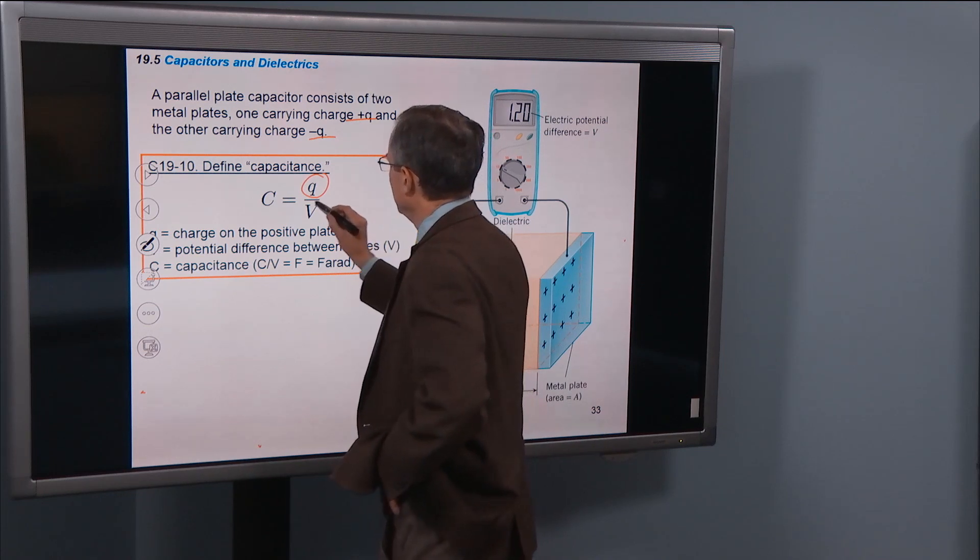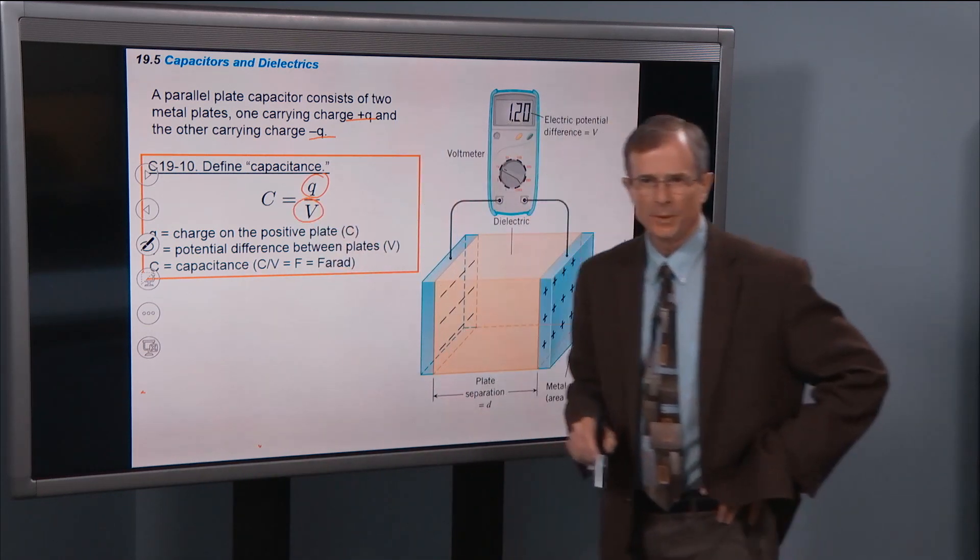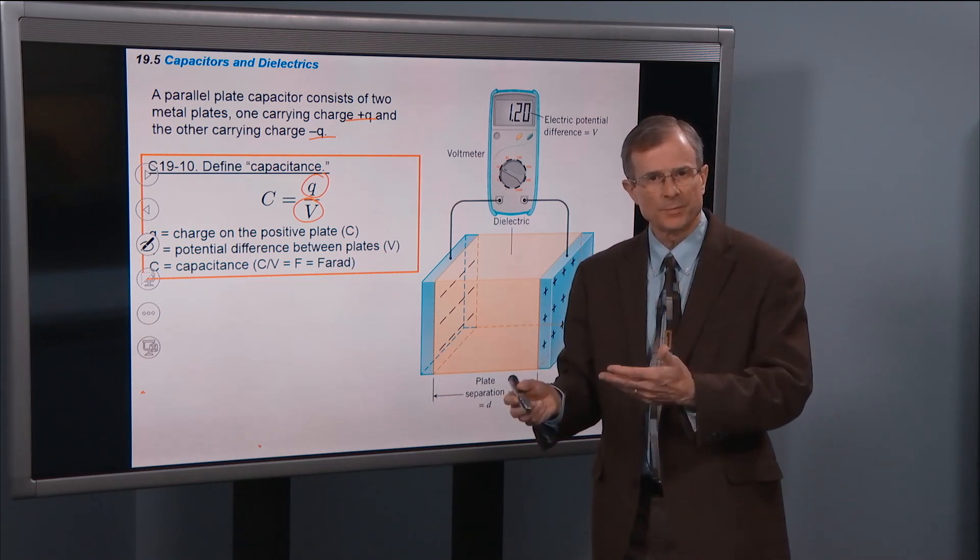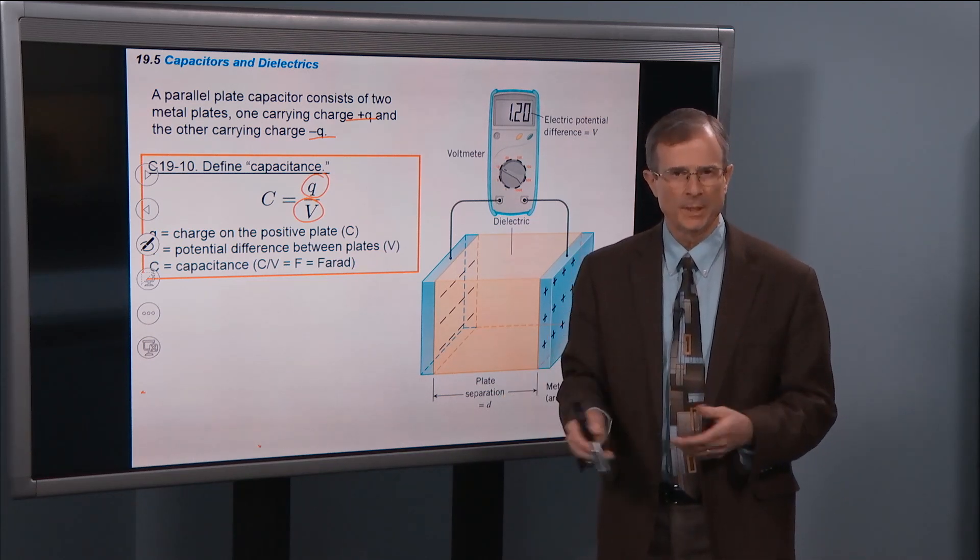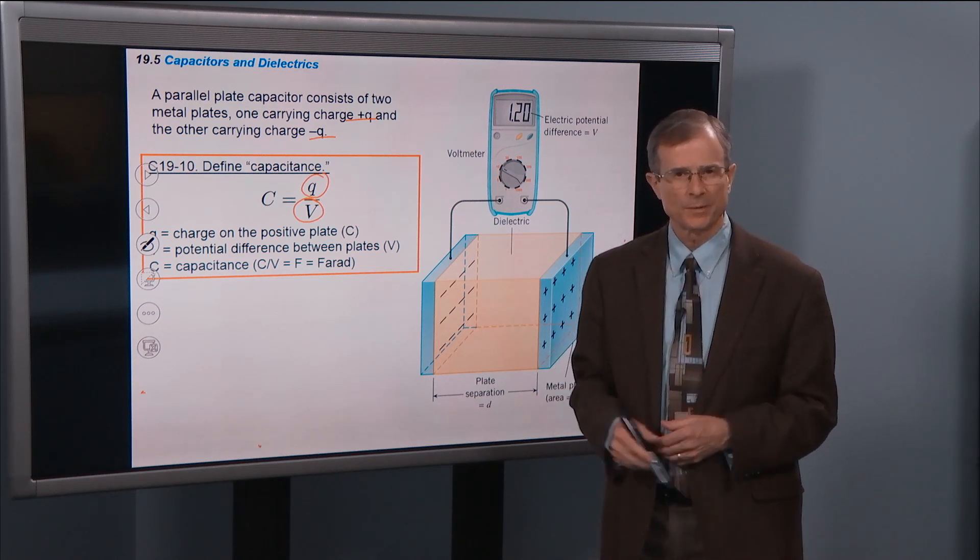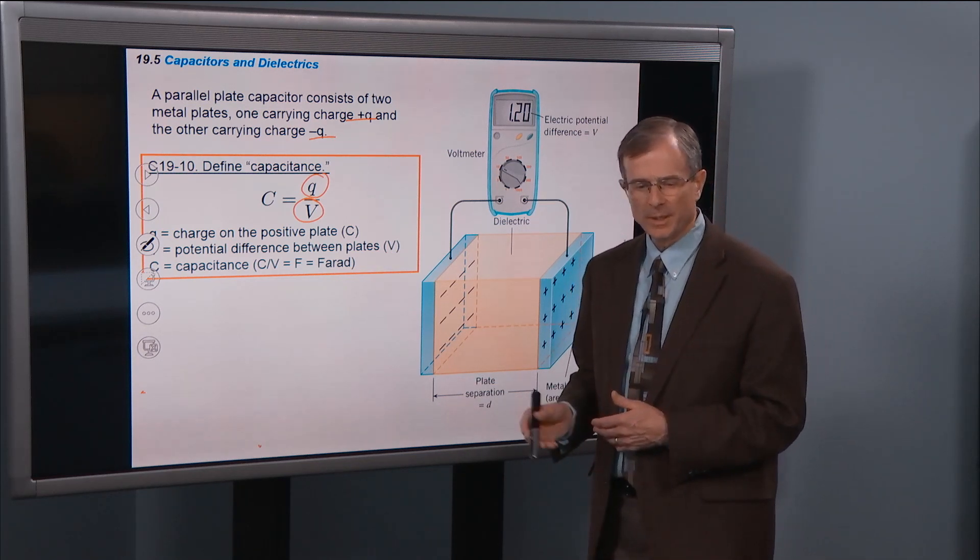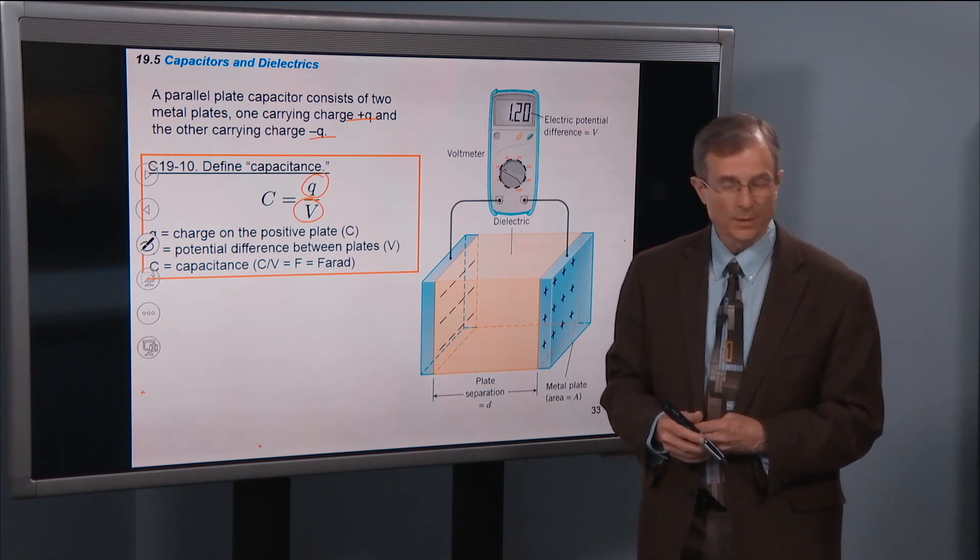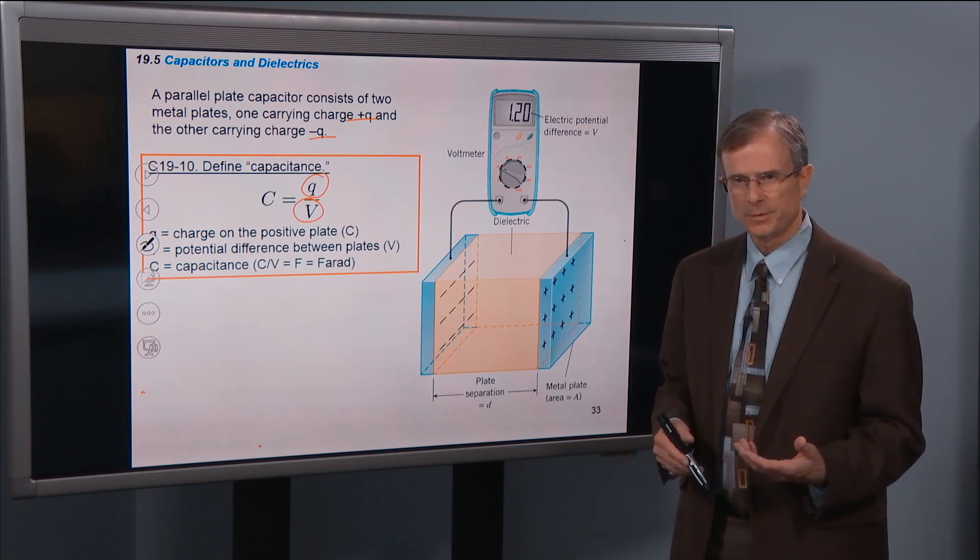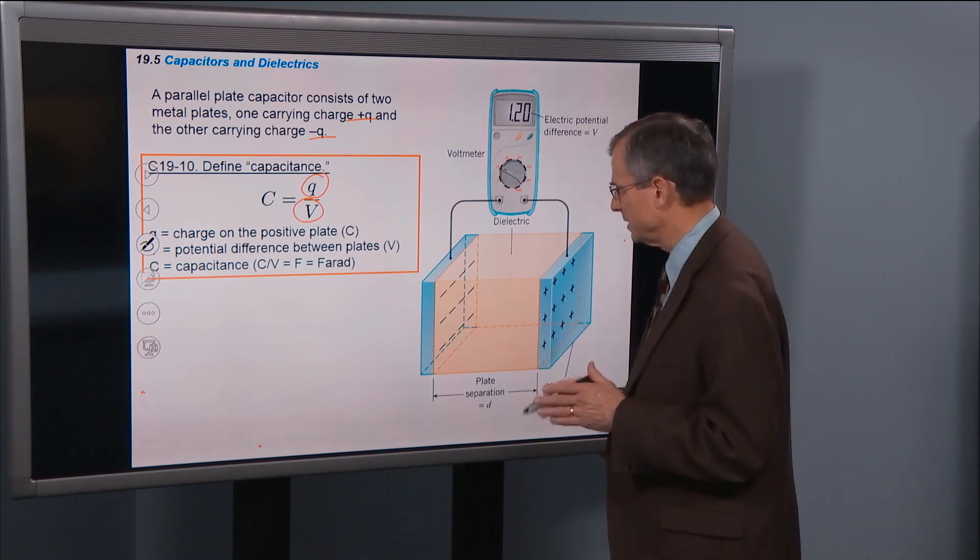V is the potential difference between the plates. So this is an electric potential difference. We would have normally written that as ΔV, a change in potential or a potential difference. But the convention is to just use V to denote that potential difference. But we'll always remember that it's a difference.